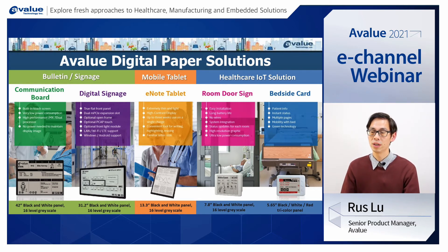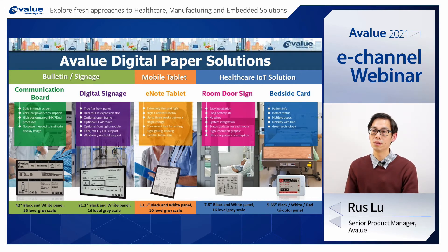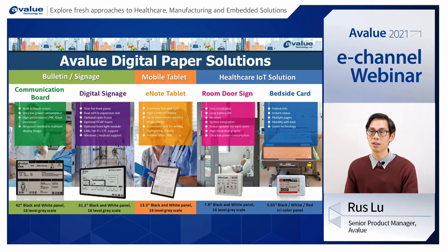Actually, we have three kinds of digital paper solutions. The first one is the 42-inch e-ink communication board. This product is to replace the traditional whiteboard in a patient room, which means nurses won't have to write or erase information every day. They can push the correct information from the backend system to each patient room, which will save the nurses a lot of time from their daily work.